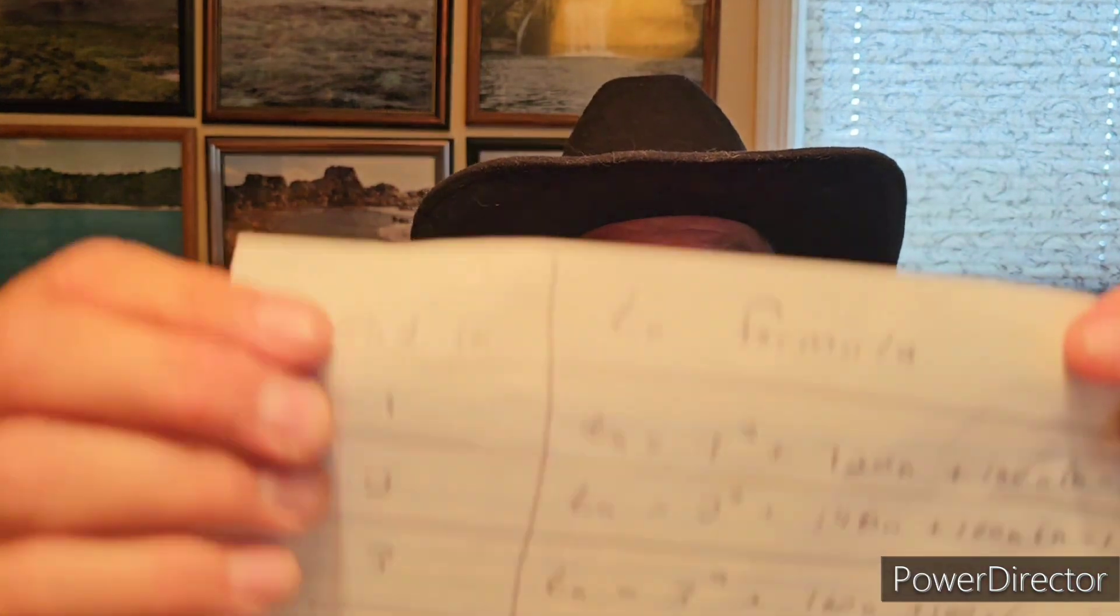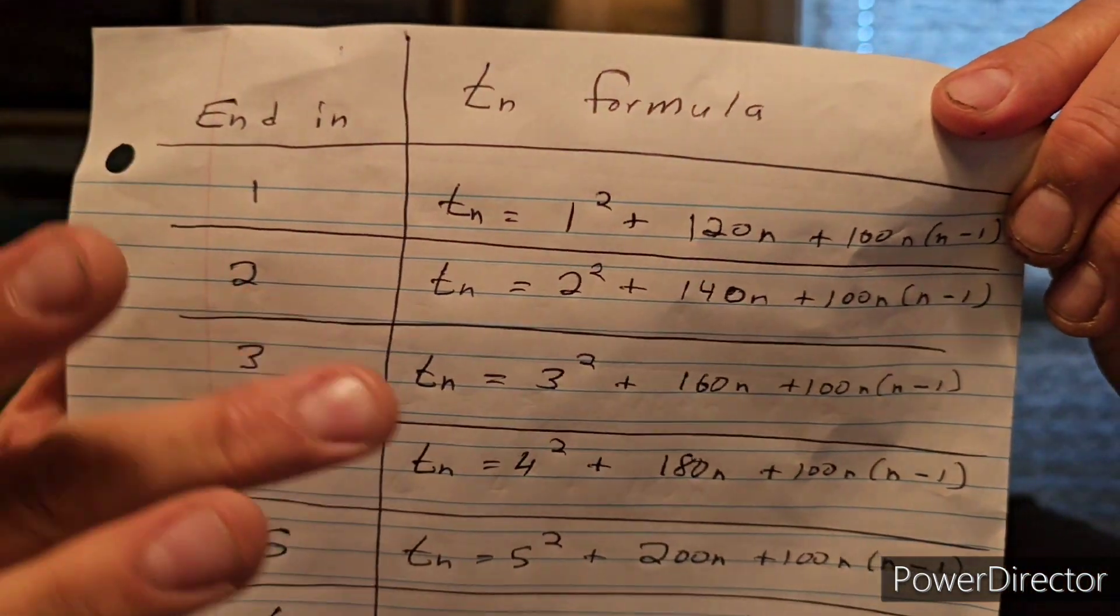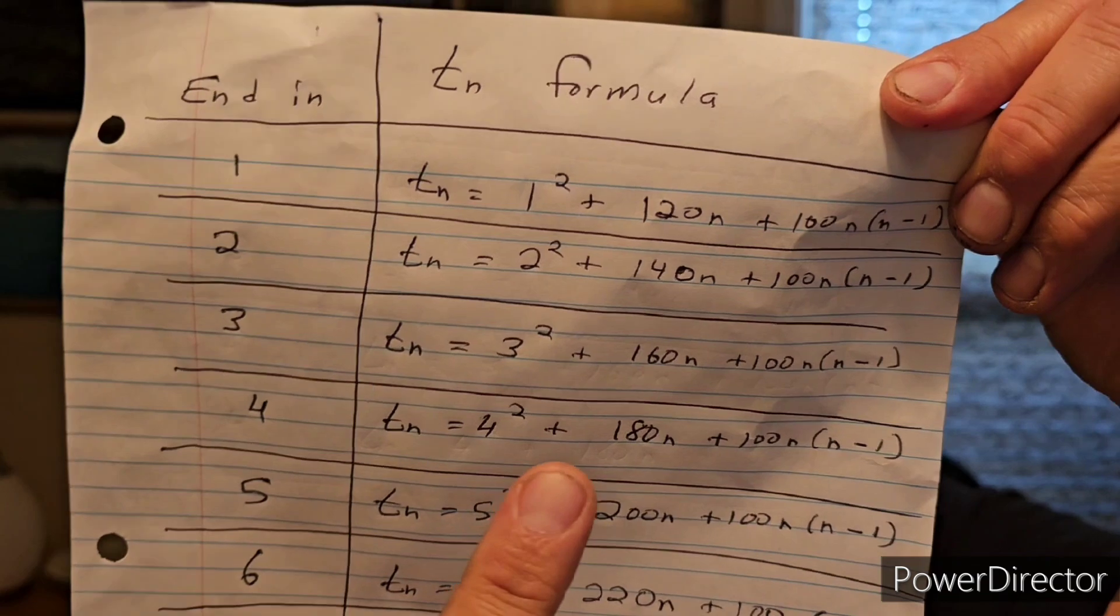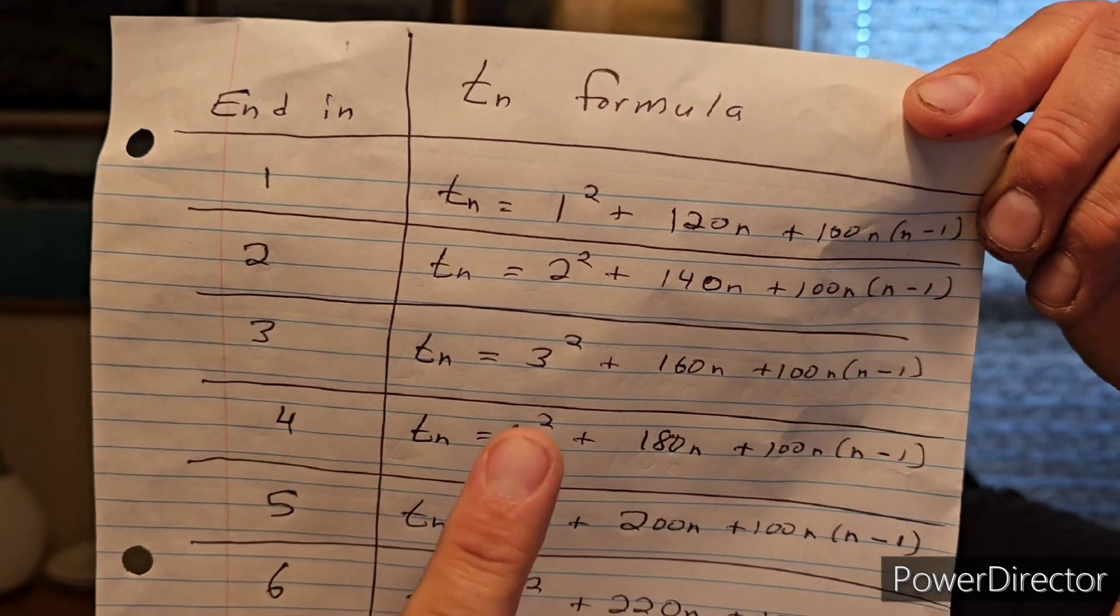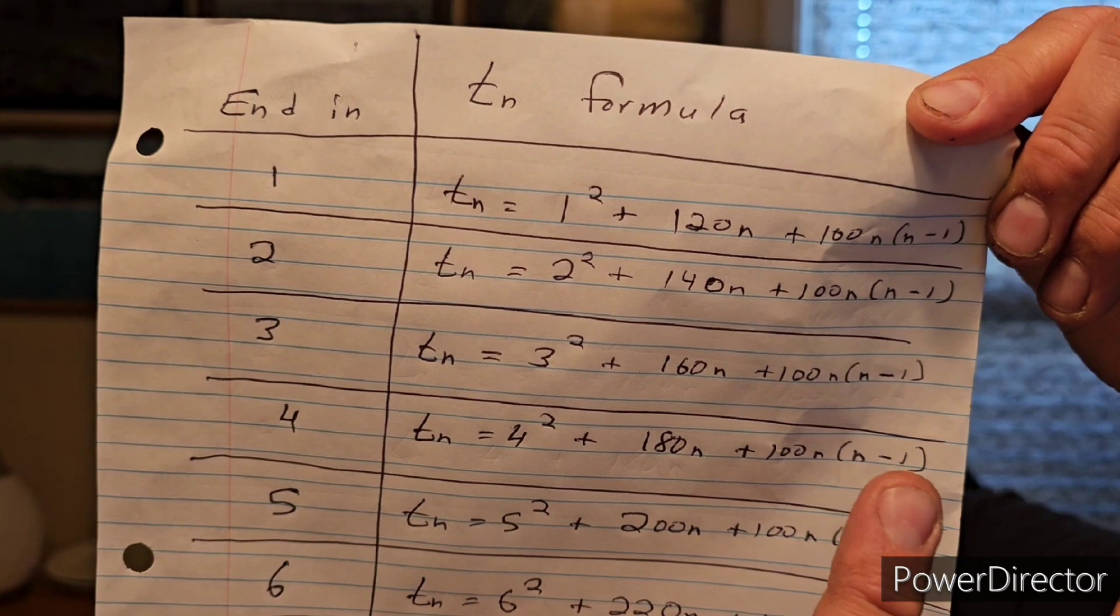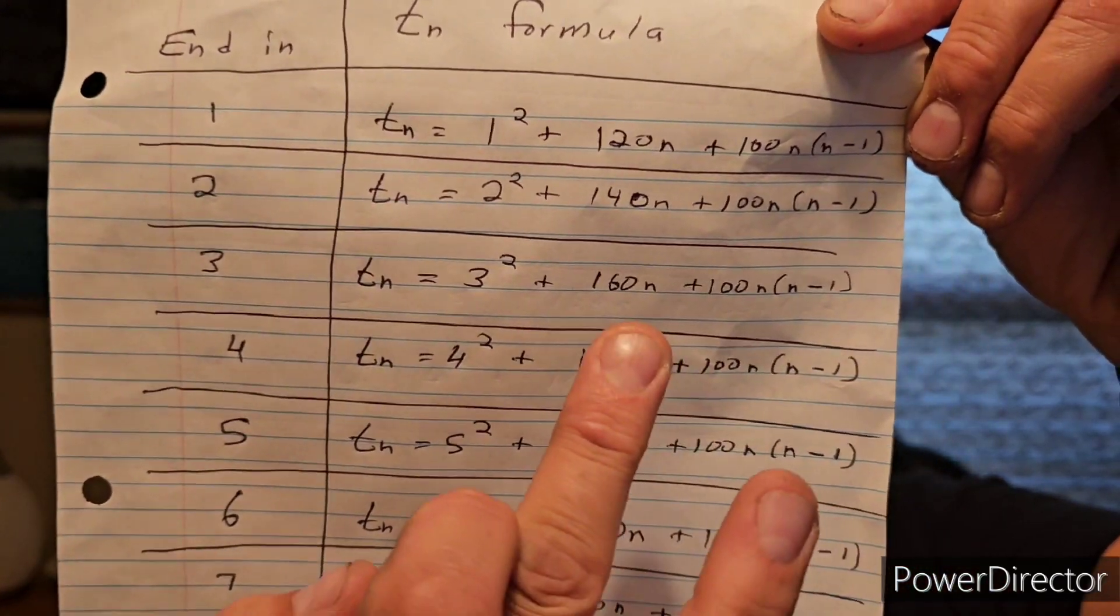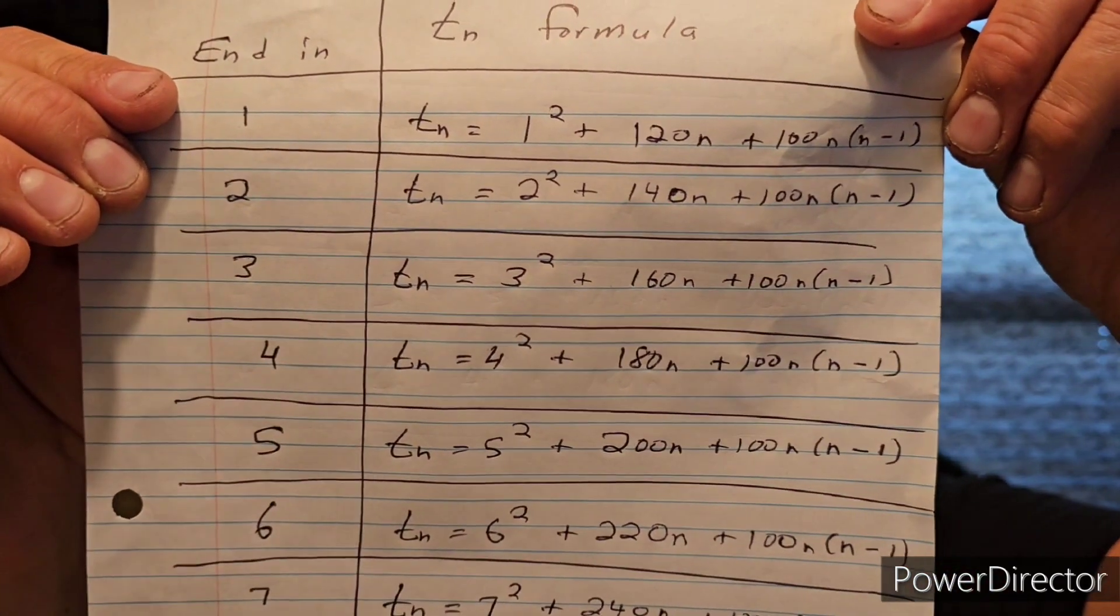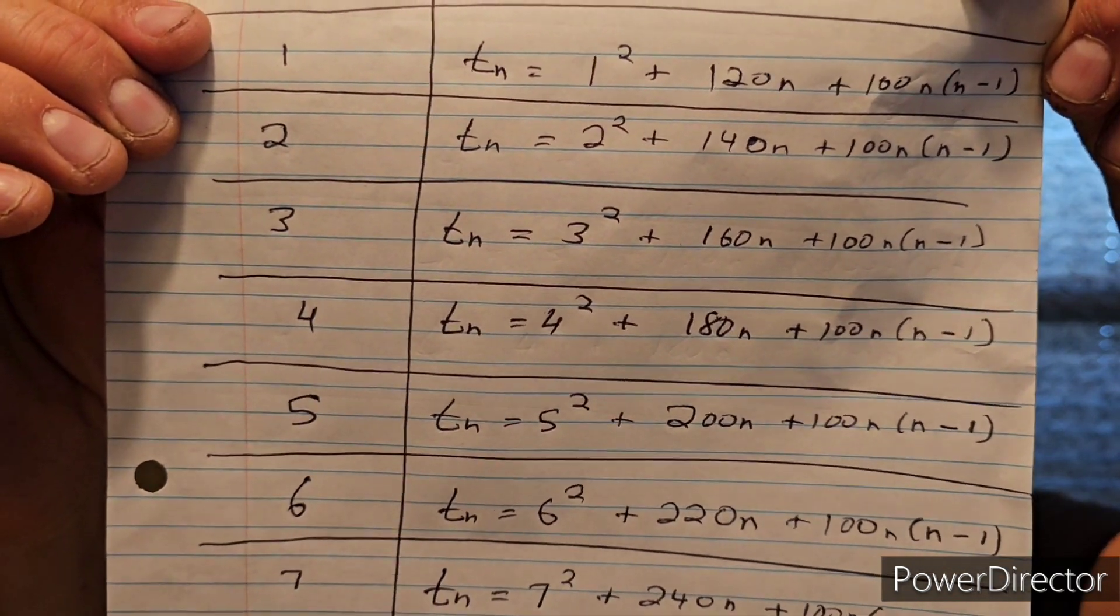Let's do a number ending in 3. Let's do 23. So that would be T2 ending in 3. So 3 squared, 9 plus 2 times 160, 320 plus 100 times 2. So 200 plus 320 is 520 plus 9. And that is, you guessed it, 529, which is 23 squared.